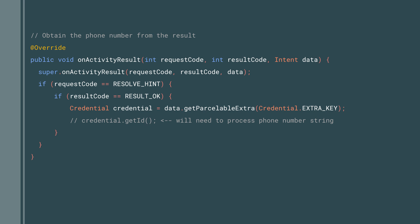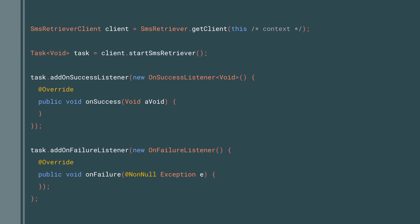Next up, you'll be getting an instance of the SMS retriever client object so you can start listening for an incoming SMS. This will stay alive for up to five minutes waiting for that incoming message. And the message needs to contain a unique string that identifies your app. When your server sends the message, it will use the same string. You'll see that step in a moment.